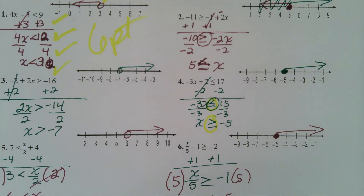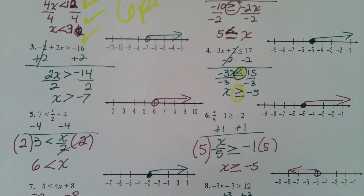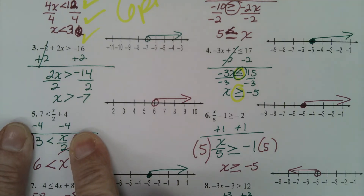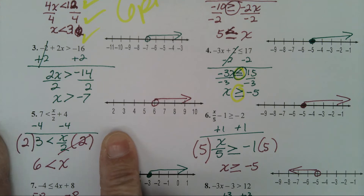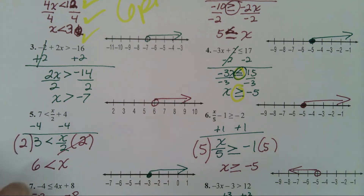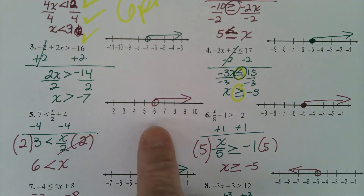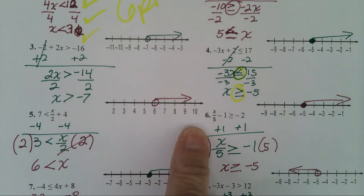Number five. In number five you have to get rid of a plus 4, so you subtract 4. You then have 3 is less than x divided by 2. You then multiply both sides by 2, and you have 6 is less than x. Open circle on the 6 going to the right.